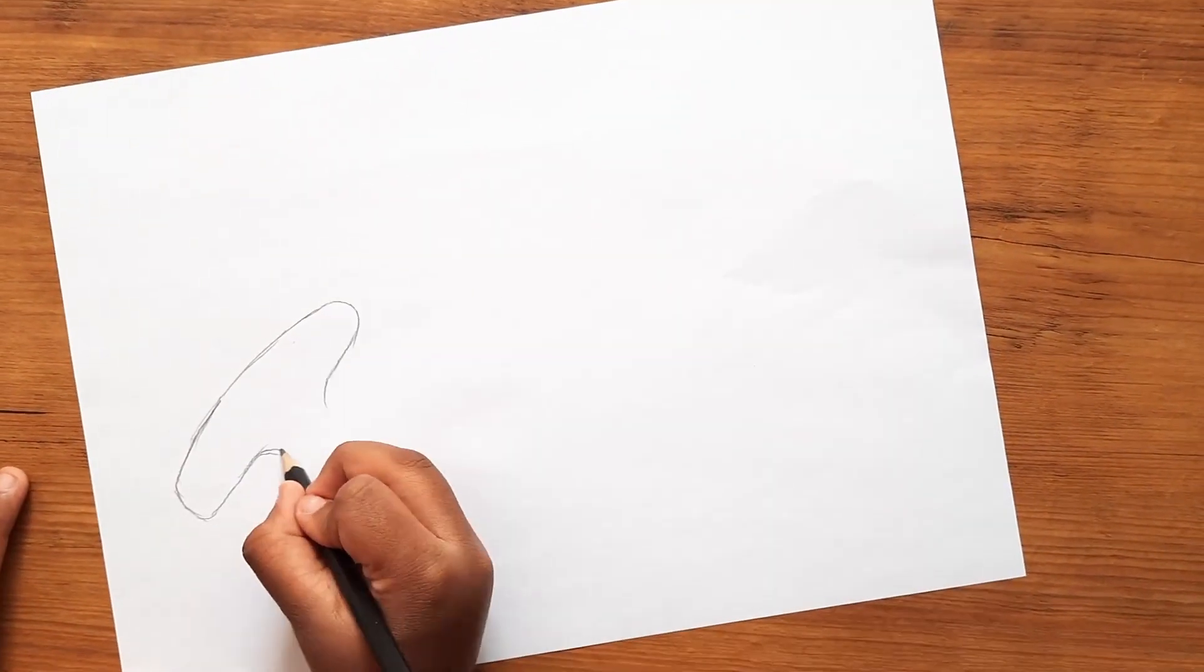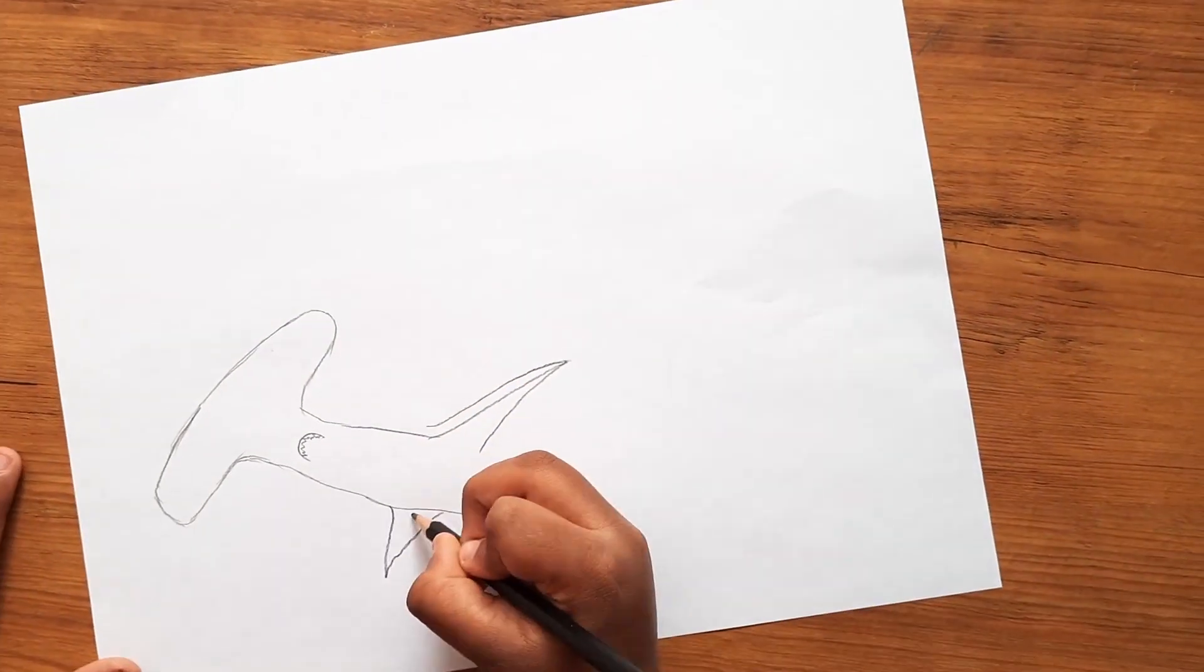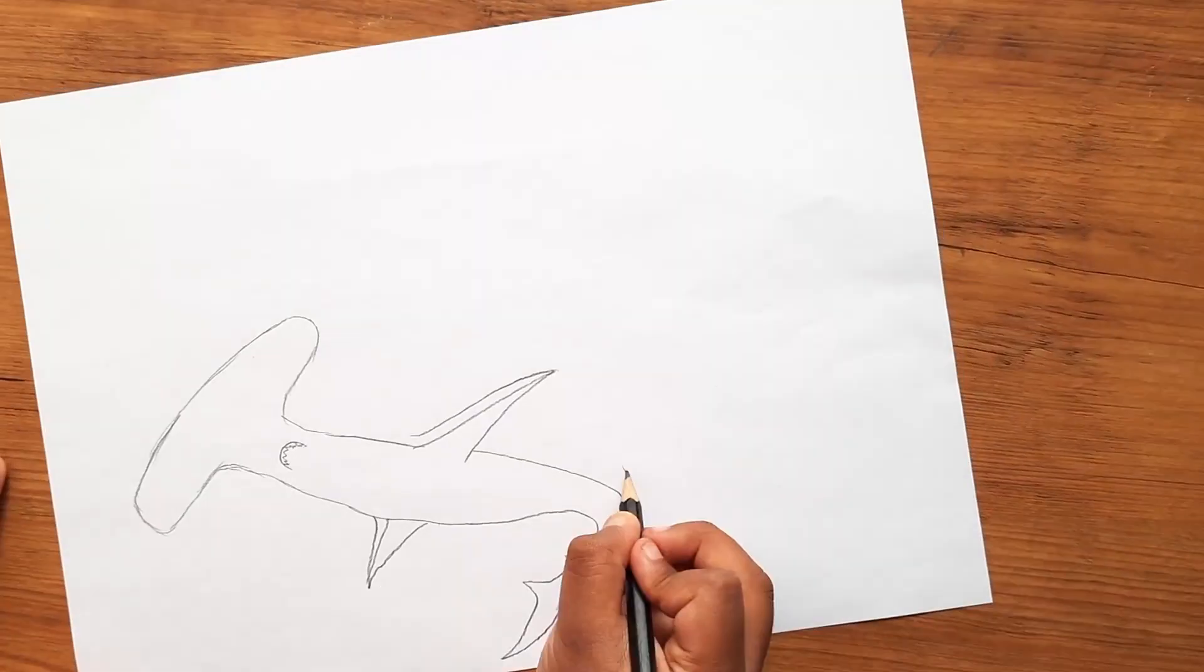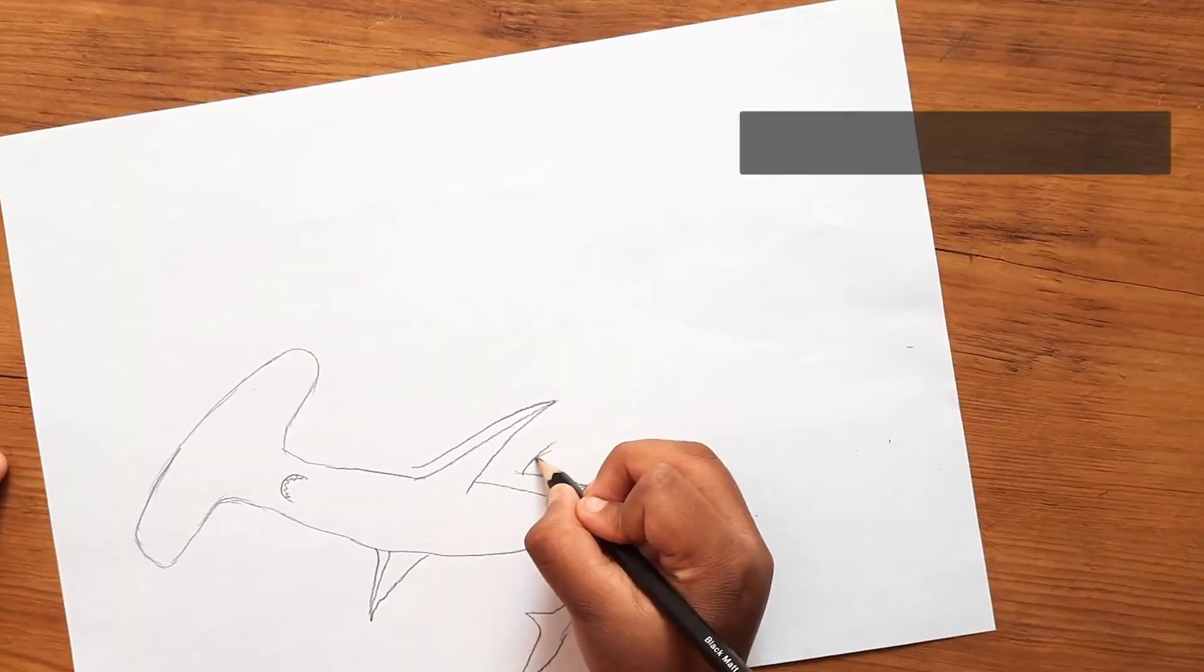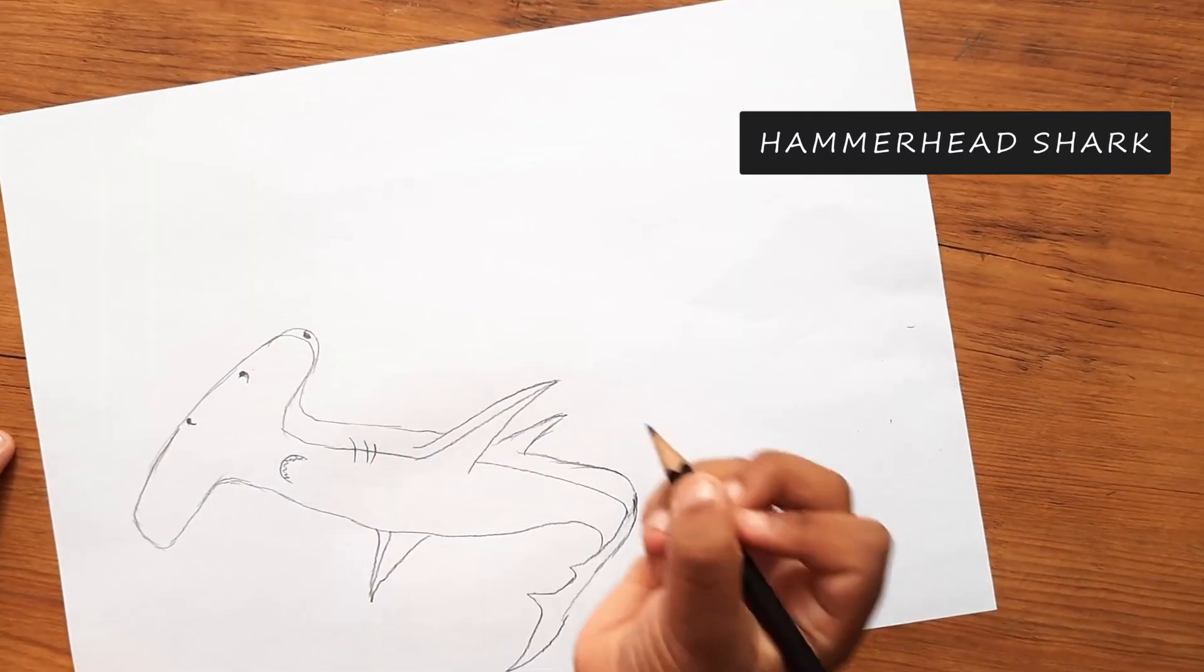Hammerhead shark. Its head looks like a hammer. They have one eye on each end of their head. Their favorite food is stingray. These guys hunt alone.